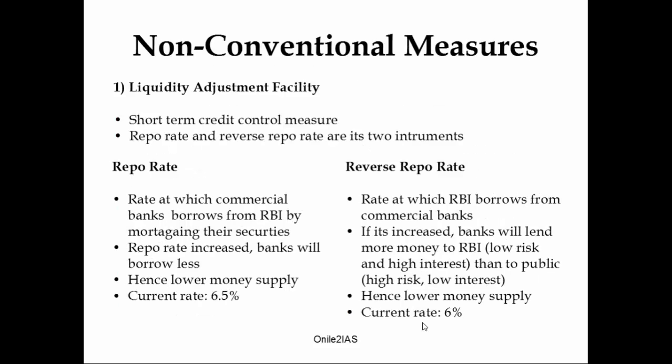Now let's move to non-conventional measures. The first one is liquidity adjustment facility, usually a short-term credit control measure. It has two instruments: repo rate and reverse repo rate. Repo rate is the rate at which commercial banks borrow from RBI by mortgaging their securities. To reduce inflation, RBI increases the repo rate, so banks borrow less and are left with lower money to lend to the public, thereby lowering money supply in the economy. The current repo rate is 6.5%.